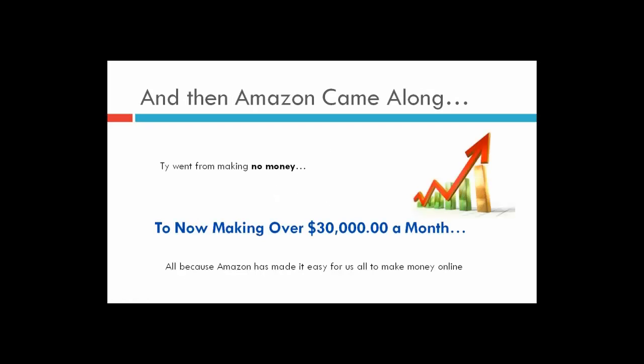When Ty first got into this, he wasn't making any money on Amazon at all. He went from making zero money to now making over $30,000 a month — and the best thing is, this is passive income. There's not a lot of work that goes into this. Once the work's done, it's done one time. It truly is recurring passive revenue, which is just wonderful. It's a true, true business model.